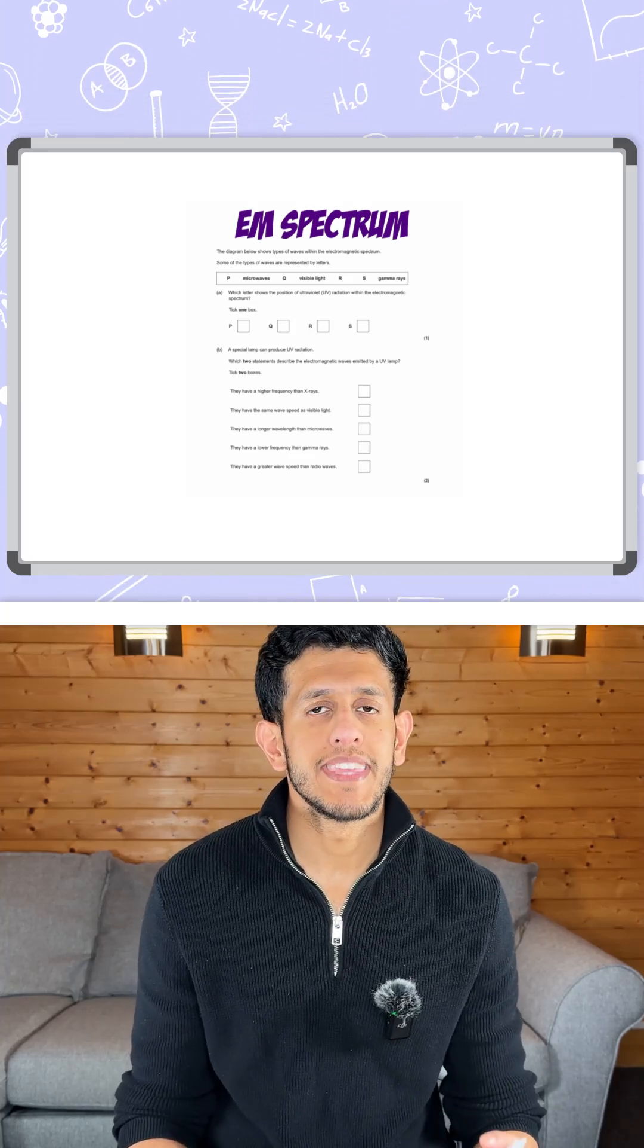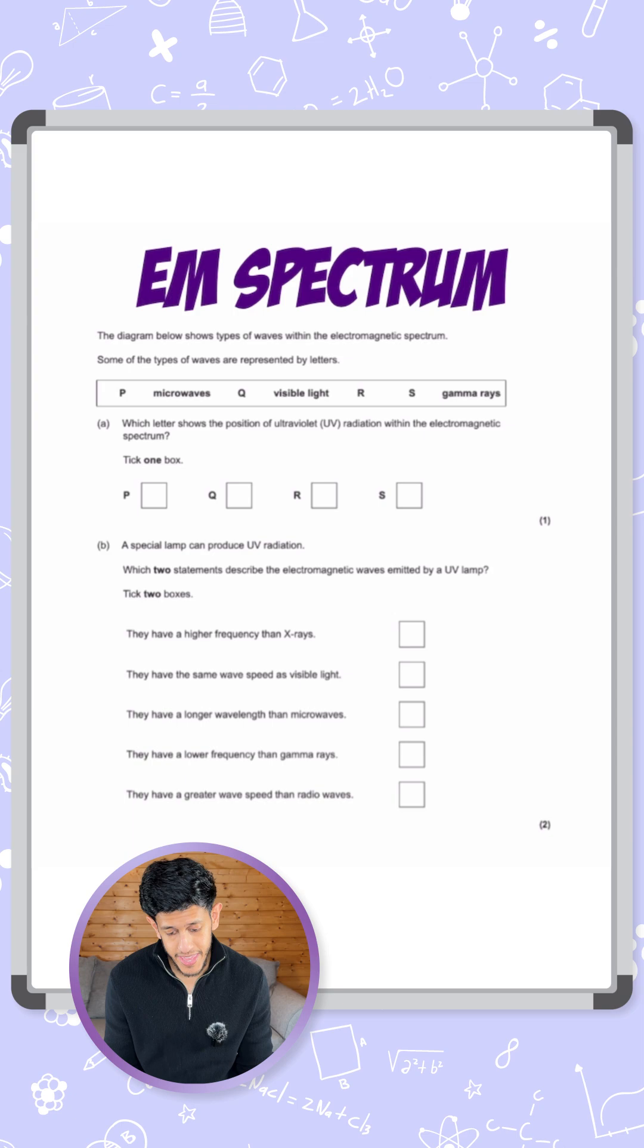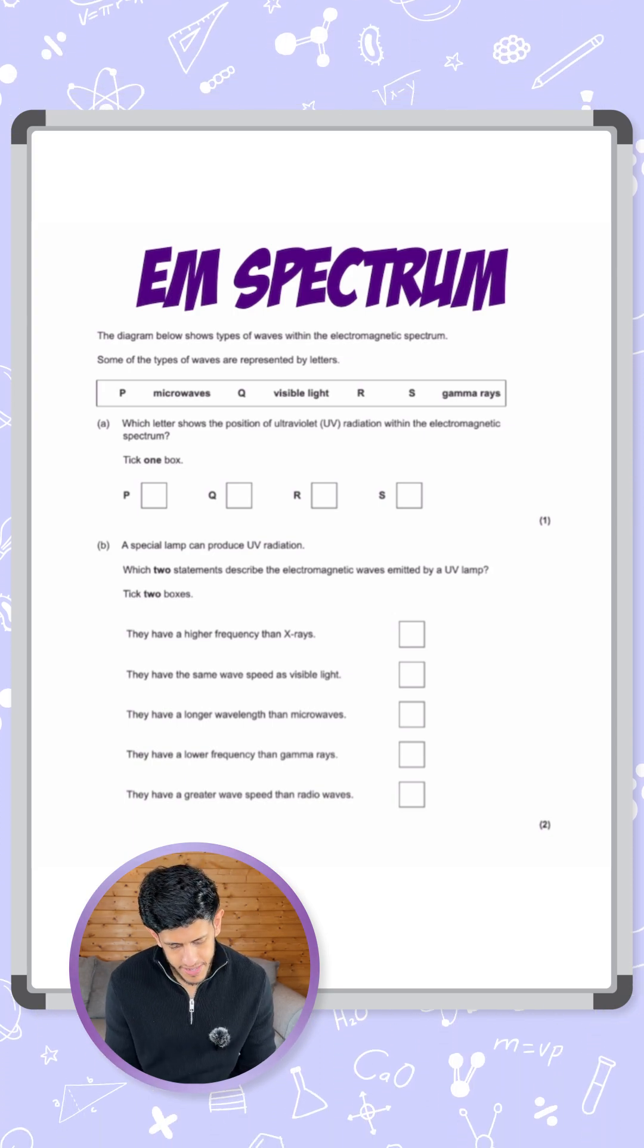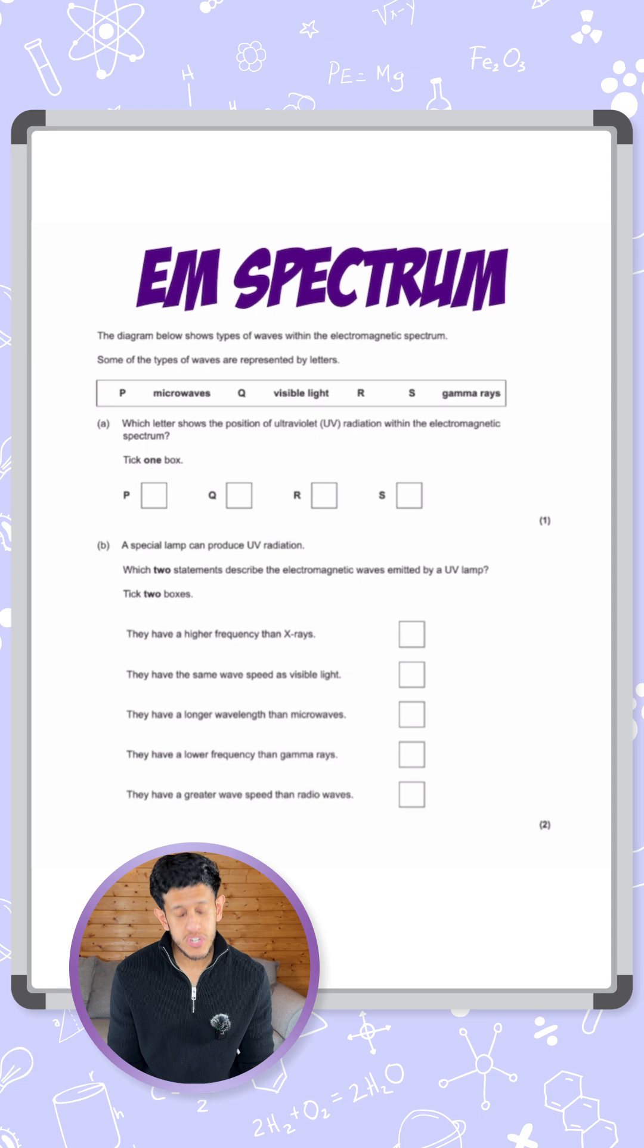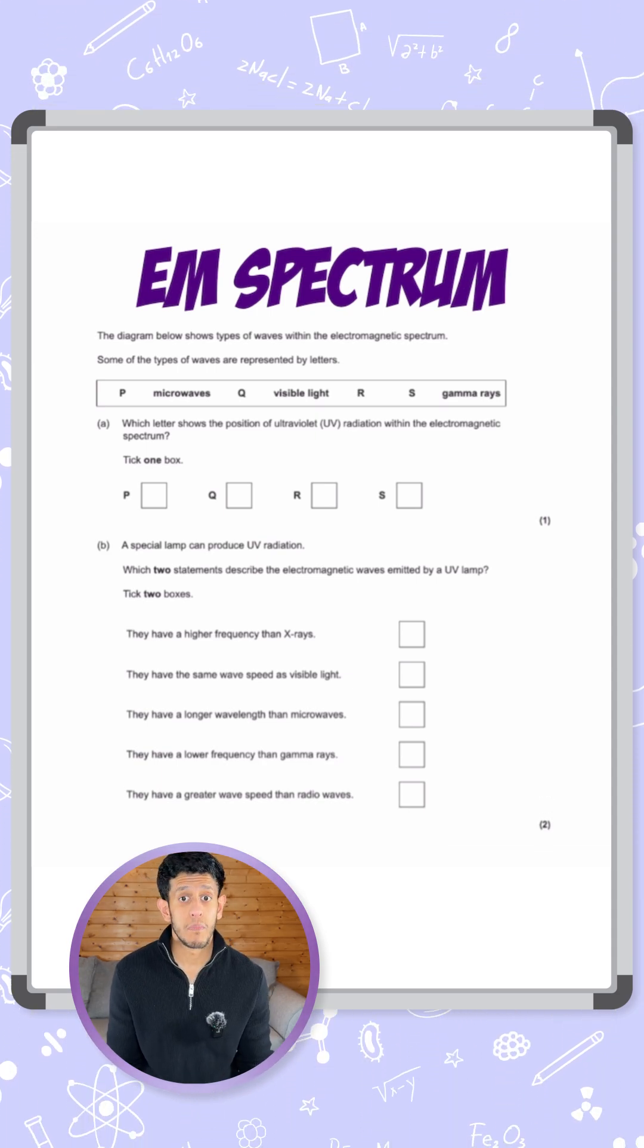Let's take a look at this question talking about the EM spectrum. The diagram below shows types of waves within the electromagnetic spectrum. Some of the types of waves are represented by letters. Which letter shows the position of ultraviolet radiation within the electromagnetic spectrum? Tick one of the boxes.